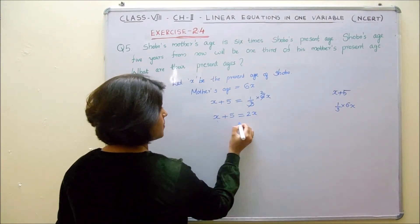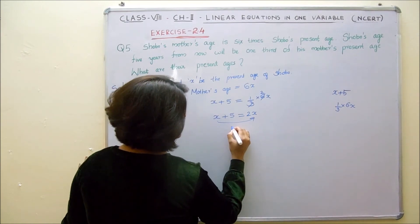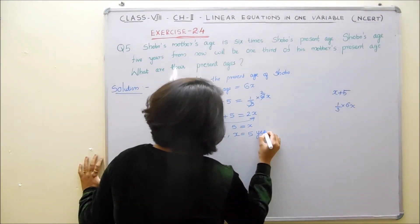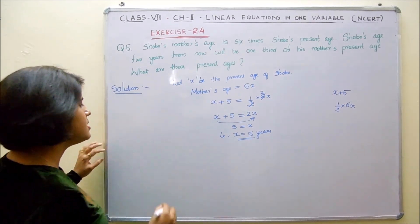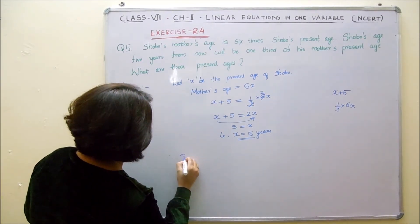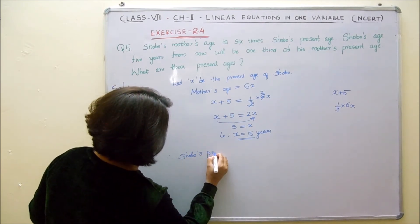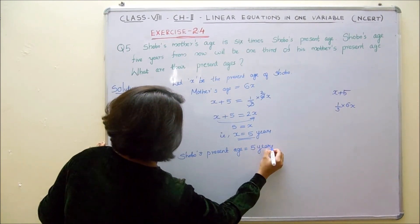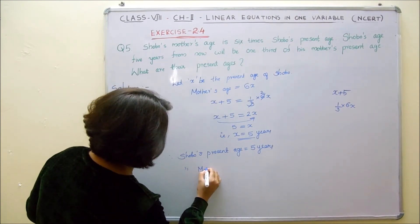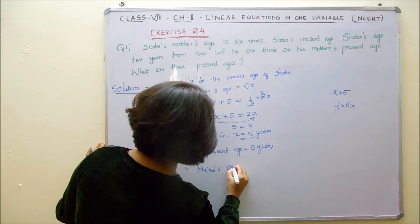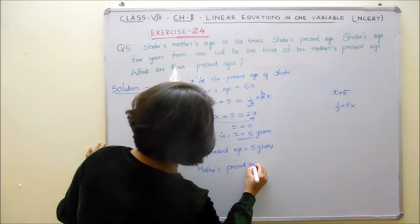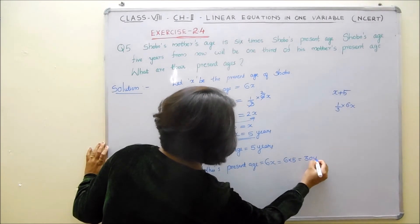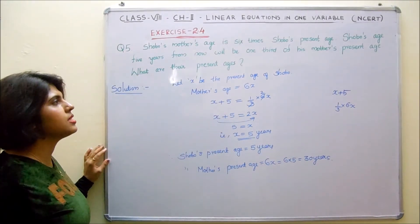One third of his mother's present age is 1 by 3 into 6x. So we can form the equation x plus 5 equals 1 by 3 into 6x. Now 6 divided by 3 gives 2, so the equation reduces to x plus 5 equals 2x. Then x will come to this side and the equation becomes 5 equals x. Therefore x equals 5 years. Shobo's present age equals 5 years and Shobo's mother's present age equals 6 into 5, which is equal to 30 years.